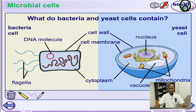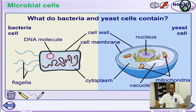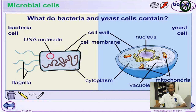These additional organelles — vacuole and mitochondria — are things yeast cells have that bacterial cells do not. This is the difference between useful microbes and harmful microbes. The useful microbes, yeast cells, are used for alcohol production, making wine, bread, yogurt, ice cream, and much more.